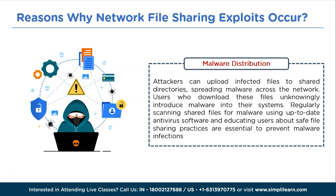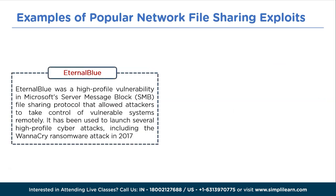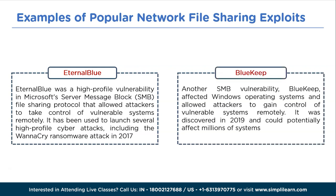Now let's look at popular historical network file sharing exploits. EternalBlue was a high-profile vulnerability in Microsoft's SMB protocol that allowed attackers to take control of vulnerable systems remotely. It was used to launch several high-profile cyberattacks, including the WannaCry ransomware attack in 2017. BlueKeep was another SMB vulnerability affecting Windows operating systems, discovered in 2019, that could potentially affect millions of systems.